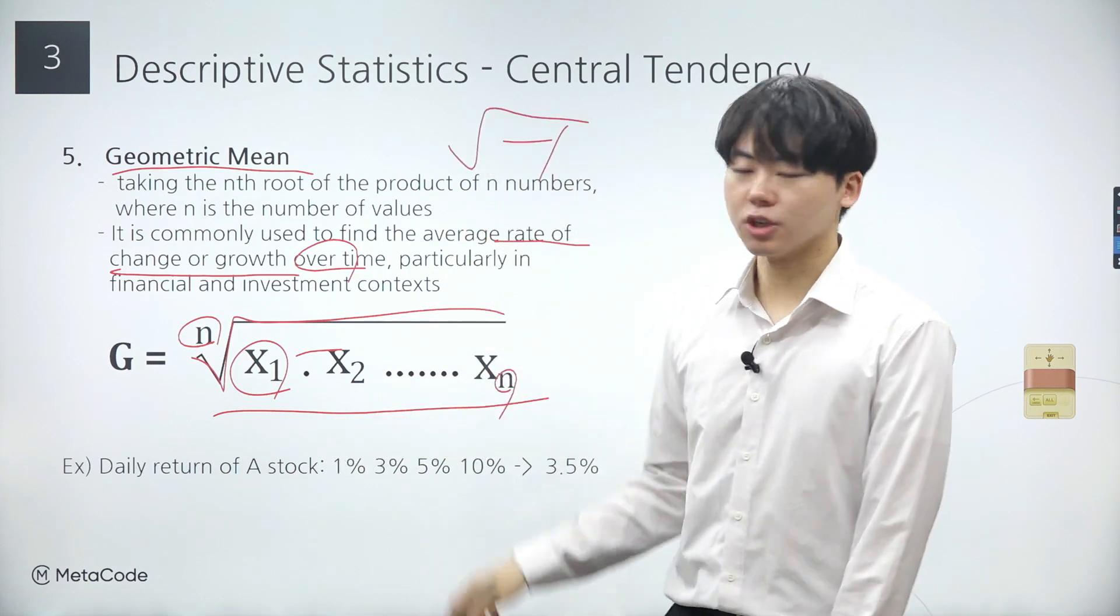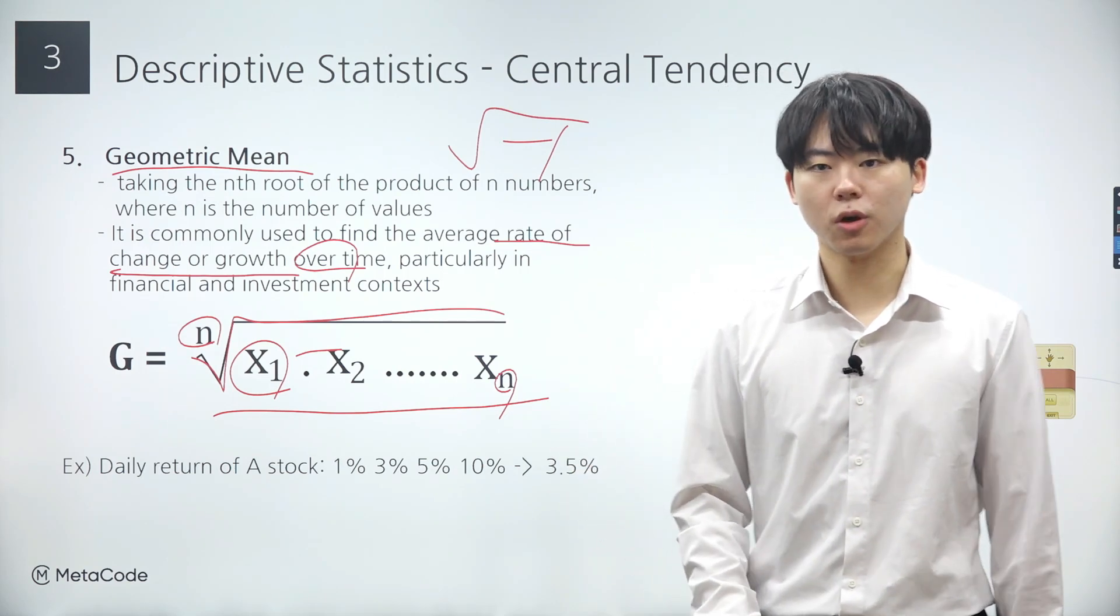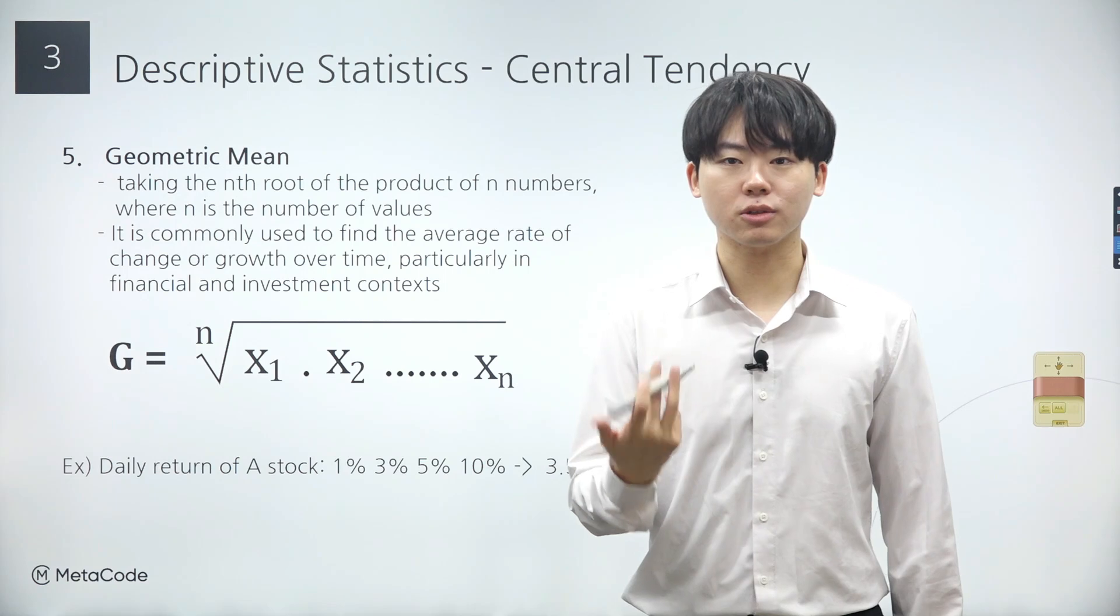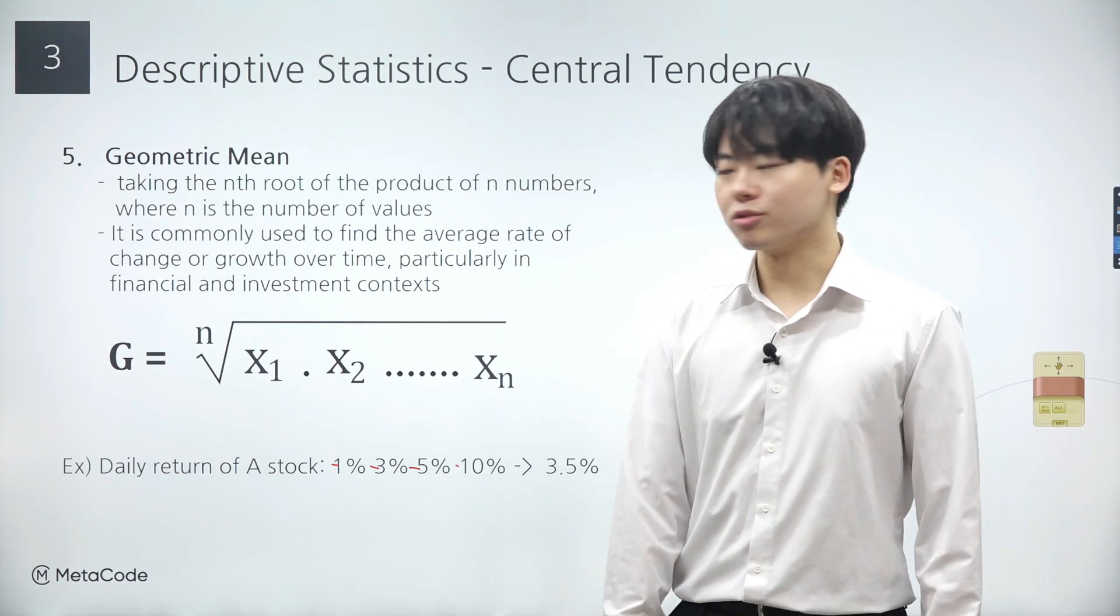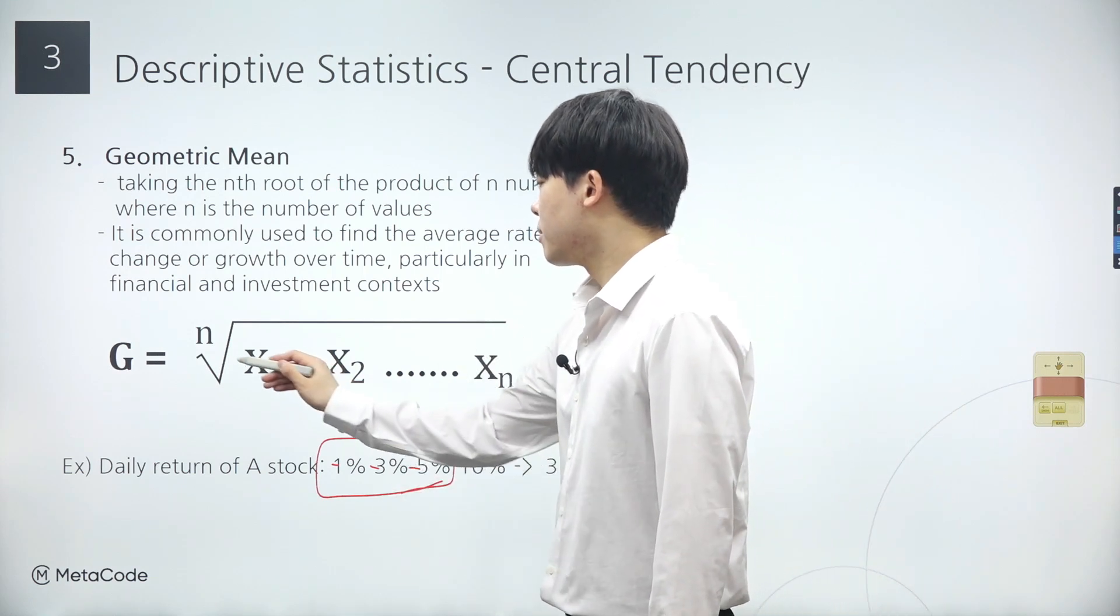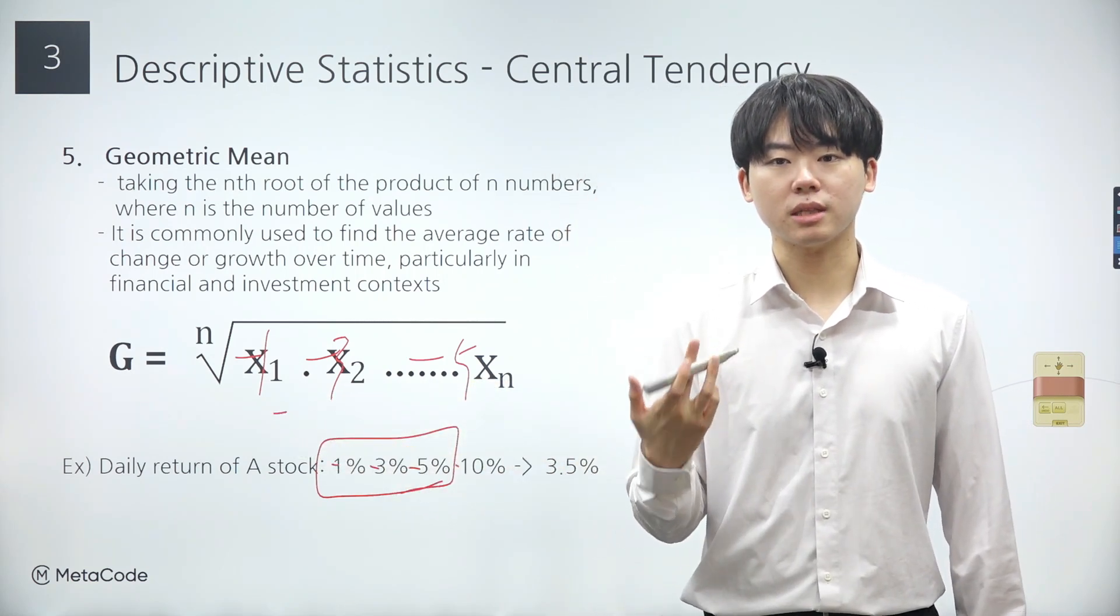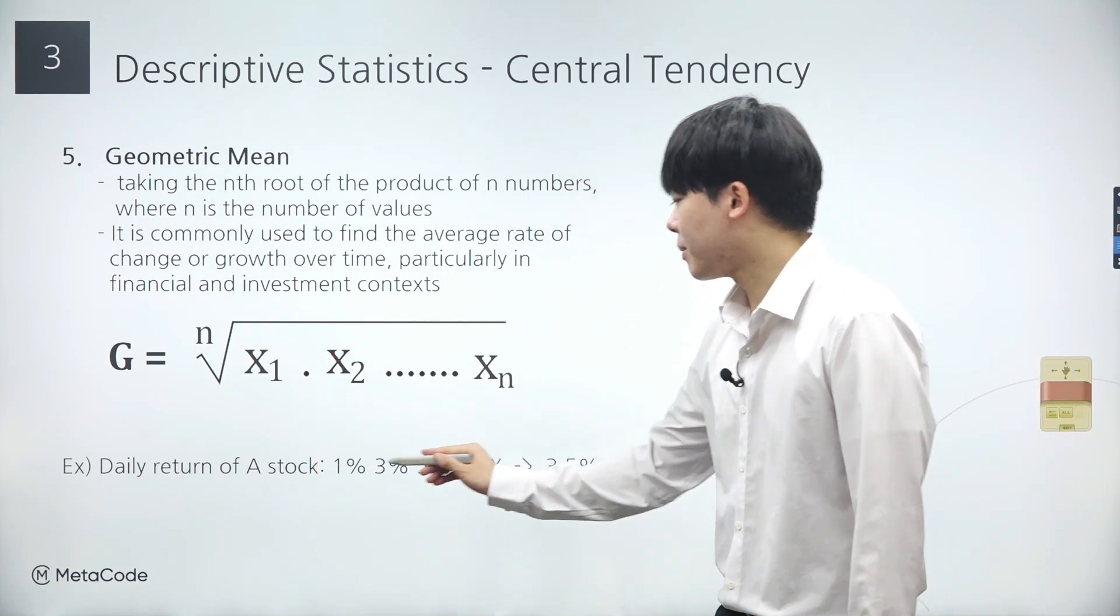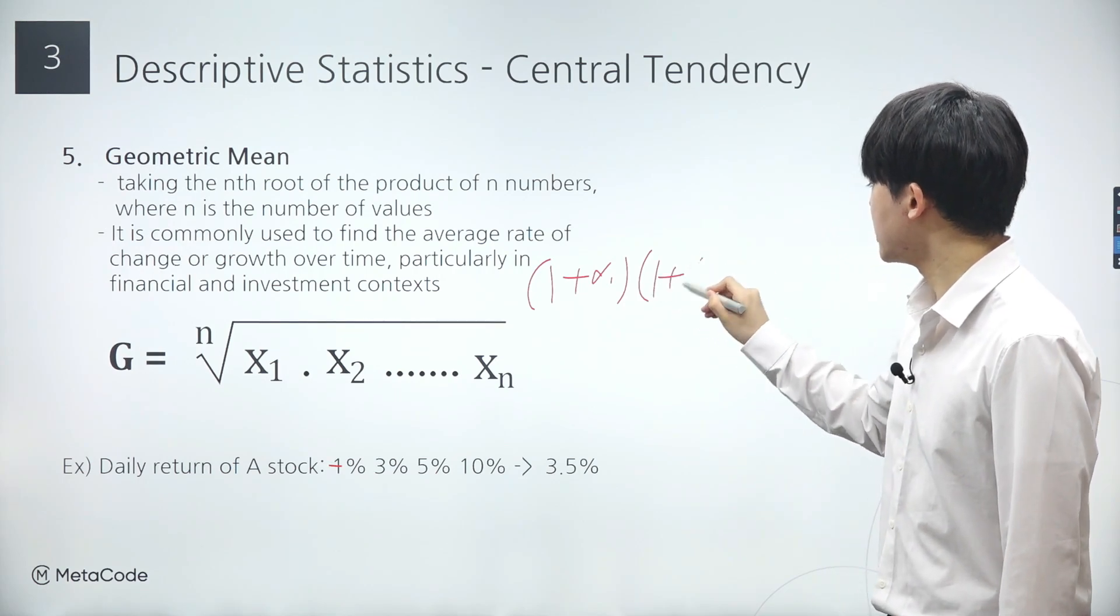However, can the value inside the root be less than 0? Technically, yes, but generally no. So let's consider a case where the product of our data is less than 0. For instance, suppose my investment profit rate is negative for 3 days, say negative 1, negative 3, and negative 5. Let's substitute negative 1, negative 3, and negative 5 into x1, x2, and x3. Then, the product of these numbers results in negative 15, which is less than 0. Consequently, the negative number goes inside the root, making the calculation more complex. To handle this, when some of our data points are less than 0, we add 1 to its value, like 1 plus x1, 1 plus x2, and so forth.